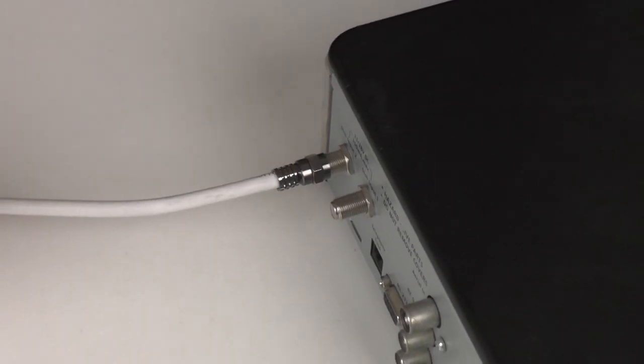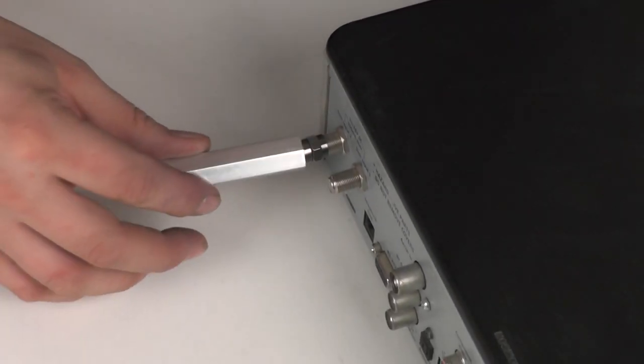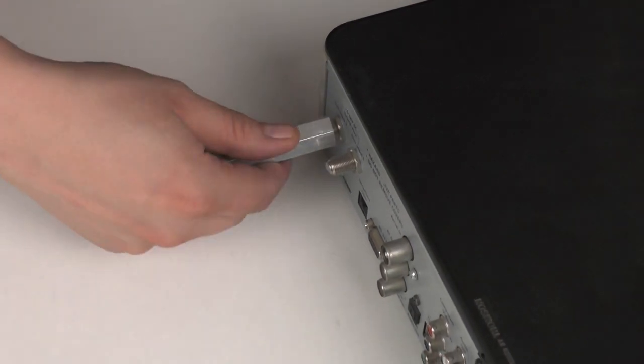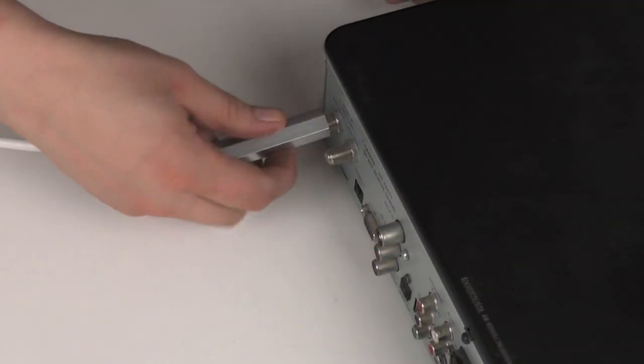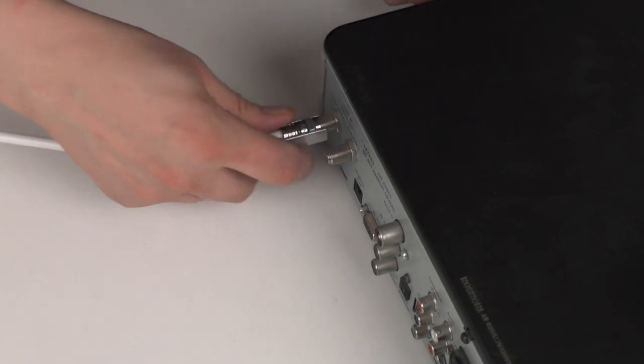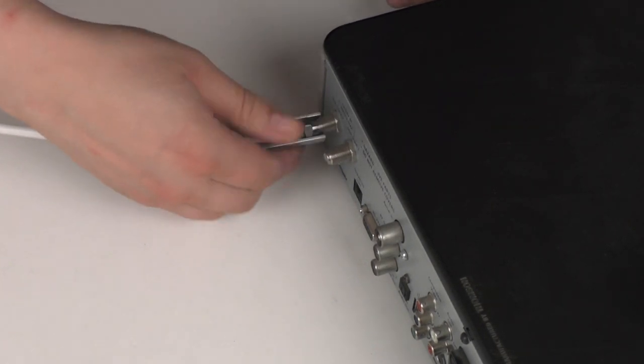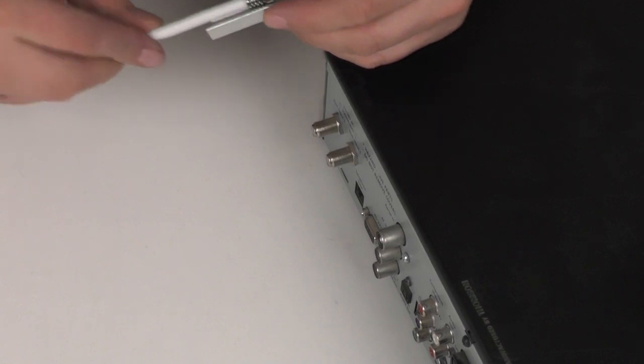In order to take the F-Connector off, you just simply slide on the tool again and just start turning. You can get a fair amount of purchase on it, especially if you use both your hands. And there we go, there's the F-Connector come off.